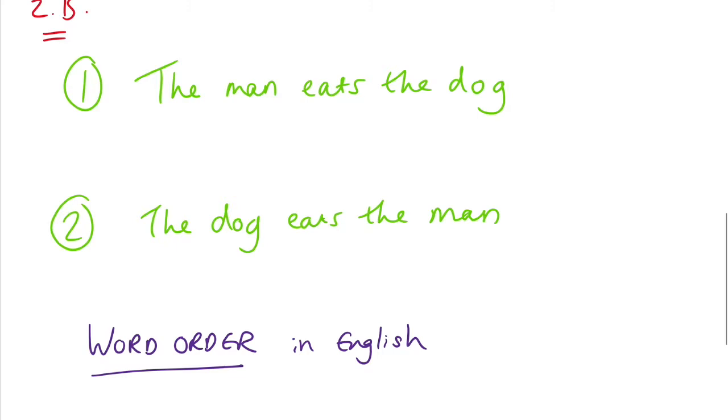So in sentence number one, the man comes before the verb eats. Which means that we can see that it is doing the eating. The man is doing the eating. It is the subject of the sentence. However, the dog comes after the verb. That means it is the object of the sentence. It is the dog that is being eaten by the man.